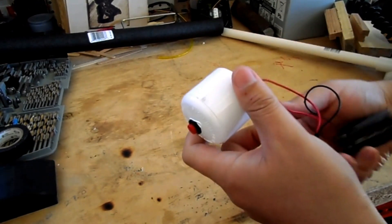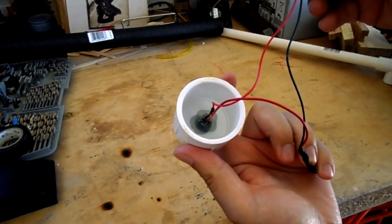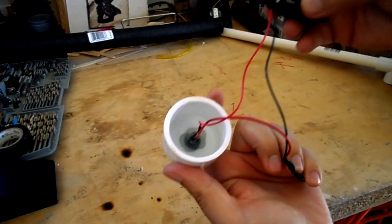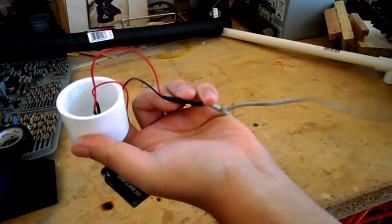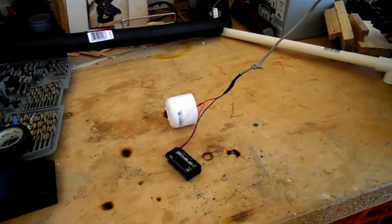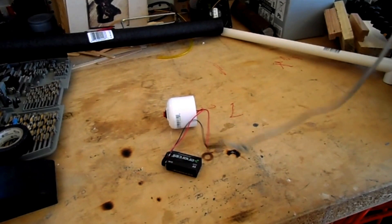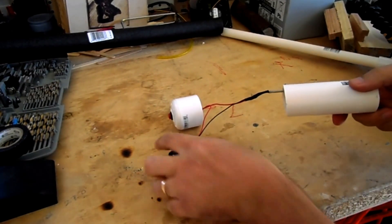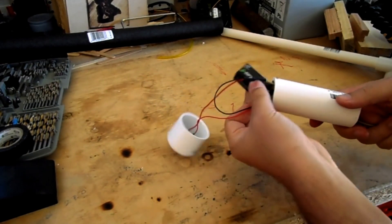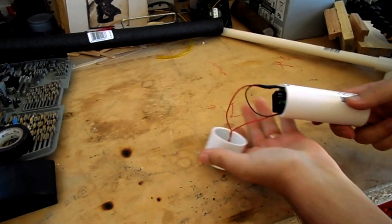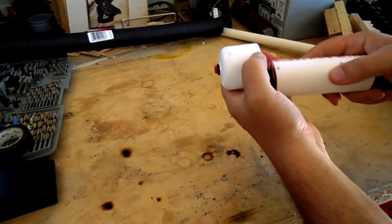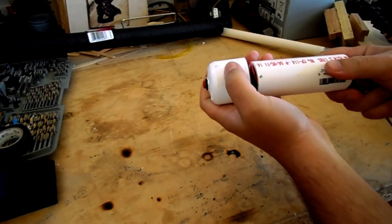I used 1 1⁄4 inch PVC pipe for this because it was the smallest pipe I could find that a 9-volt battery would fit in. Go ahead and stick everything inside the pipe, but don't glue these joints because you're going to have to take them apart later to get the battery out.